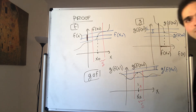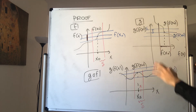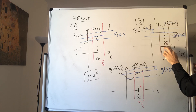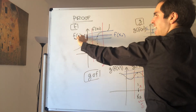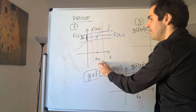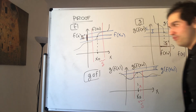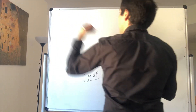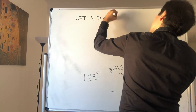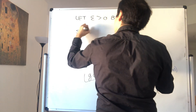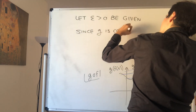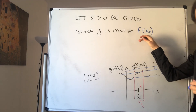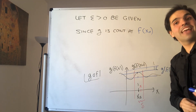We need to make this precise. Essentially, we start with epsilon, find a small delta prime for g, and then that delta prime becomes the target for f, and using the continuity of f we find an even smaller delta that makes everything work. So now on to the proof, after all those pictures.